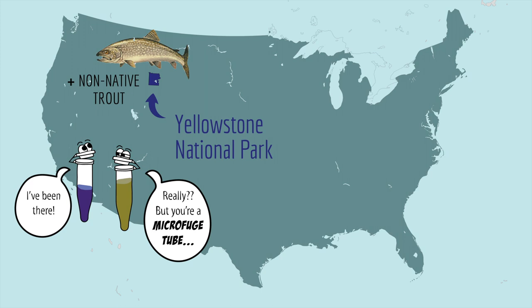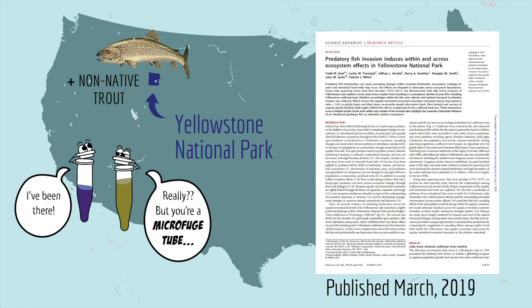Of course, food webs can change if the ecological system changes. In the 1990s, a non-native type of trout was introduced in Yellowstone National Park, and this 2019 paper documented some of the wide-ranging effects that occurred after the new trout was introduced.